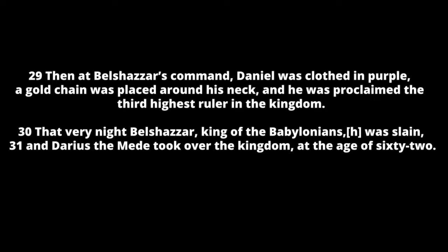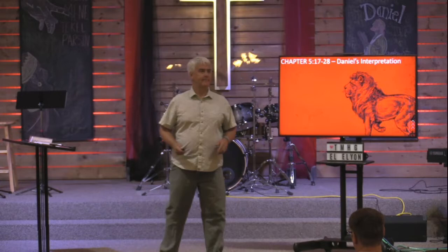Then at Belshazzar's command, Daniel was clothed in purple, a gold chain was placed around his neck, and he was proclaimed the third highest ruler in the kingdom. Belshazzar kept his word. Then verse 30: that very night, Belshazzar king of the Babylonians was killed, and Darius the Mede took over the kingdom at the age of 62.